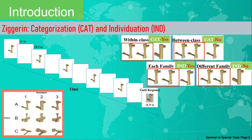The subject will respond yes or no. For individuation, you present pictures 1 to 5 that are identical with the test picture — for example, A1 within the same class — so in the 6th test picture, it should also be A1.